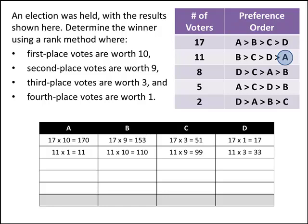Filling in the next row: D is ranked first with 8 voters, so 8 times 10 is 80. C is ranked second: 8 times 9 gives 72 points for C. A is ranked third: 8 times 3 gives 24 points for A. And B is ranked fourth: 8 times 1 gives 8 points for B.